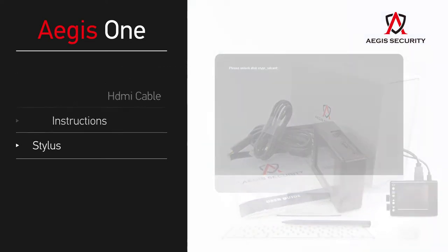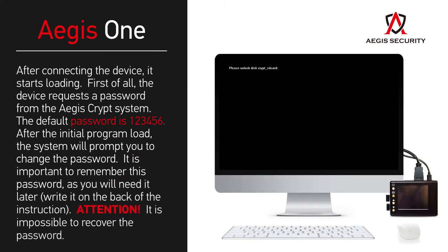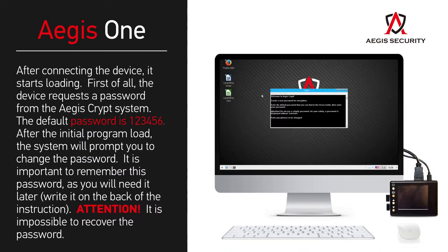After connecting the device, it starts loading. First of all, the device requests a password from the Aegis Crypt system. The default password is 123456. After the initial program load, the system will prompt you to change the password. It is important to remember this password, as you will need it later. Write it on the back of the instruction. Attention: it is impossible to recover the password.